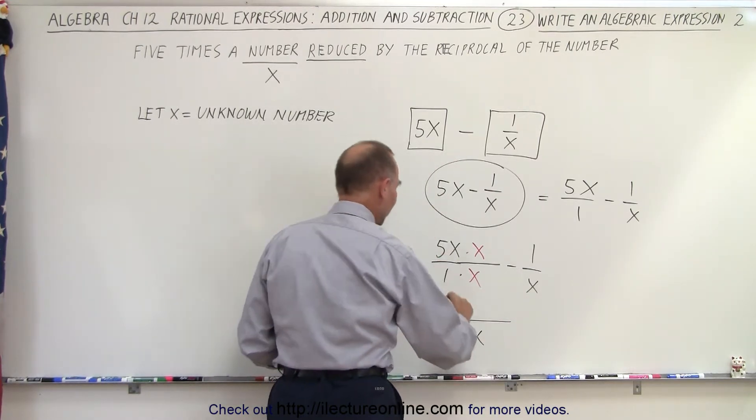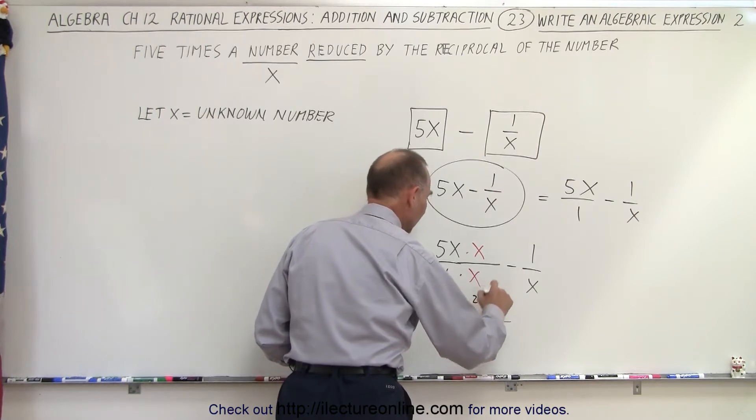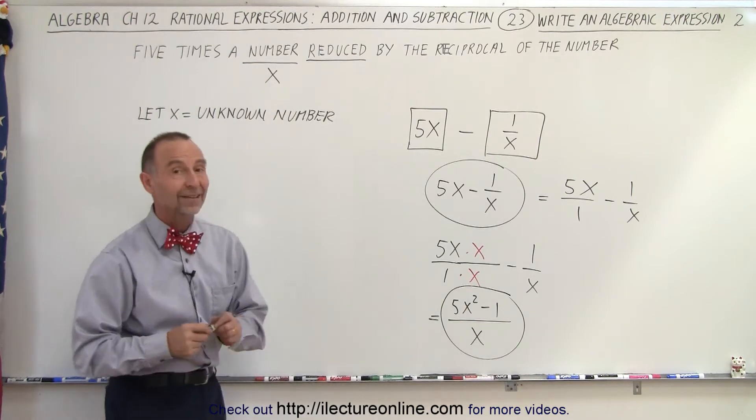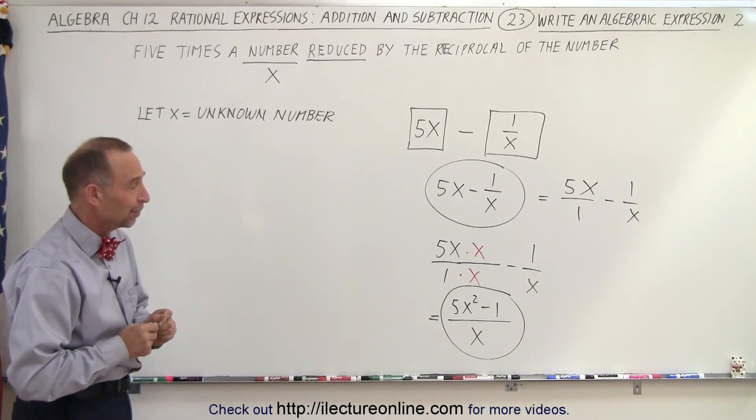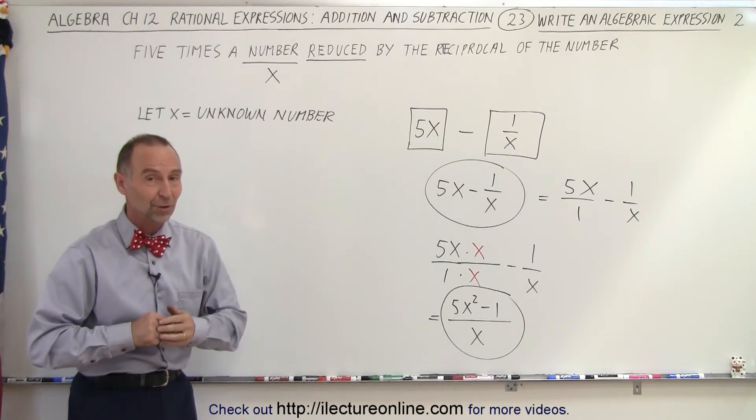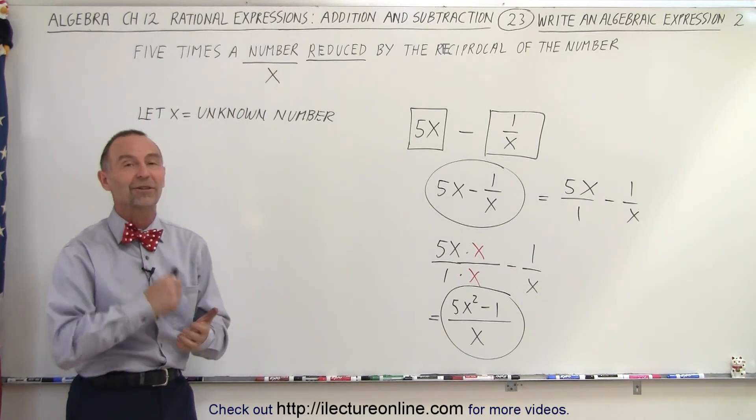And in the numerator we get 5x squared minus 1. And so this is how we write that over a single common denominator - the same expression but written in the way we're now accustomed to when we add subtract rational expressions.